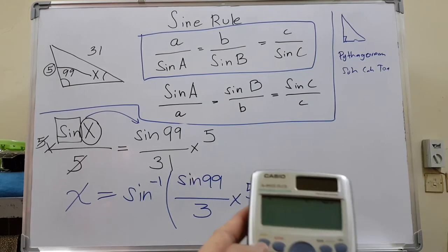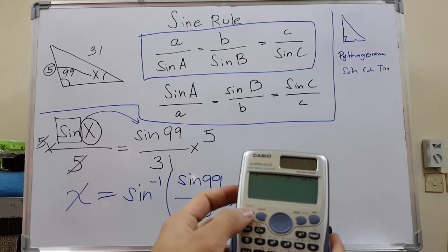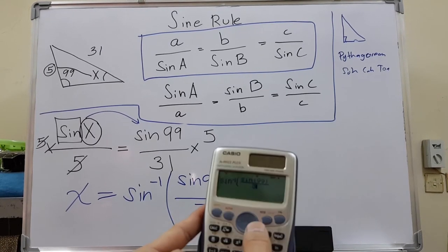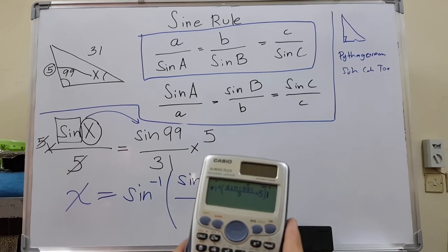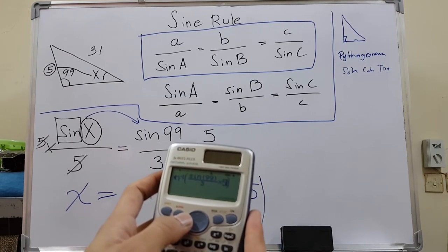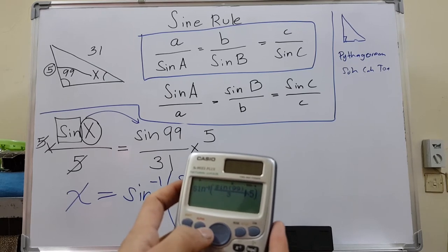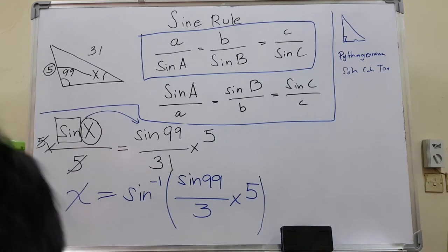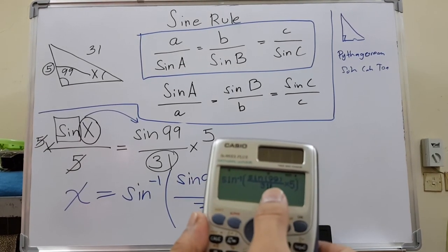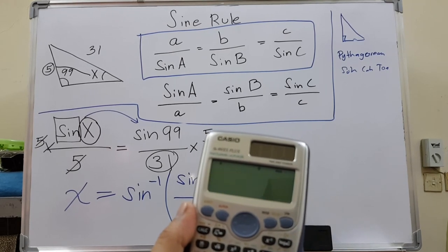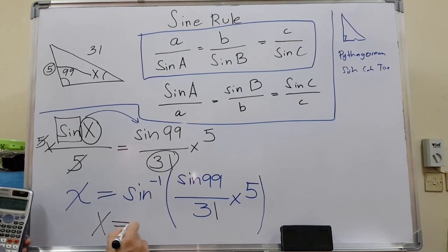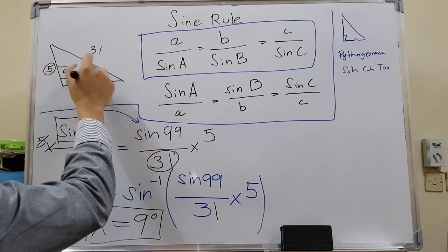Just put it on the calculator. The sine inverse is on top of sine. You can Google or YouTube how to find it. You will have sine with the power negative 1, then write everything. Oh, I got math error. Wait, I forgot—it has to be 31. Sorry, I made a mistake. The bottom part is 31, not 3. Let me correct that. Now equals, and I have 9. So our angle is 9 degrees. Angle X is 9 degrees.